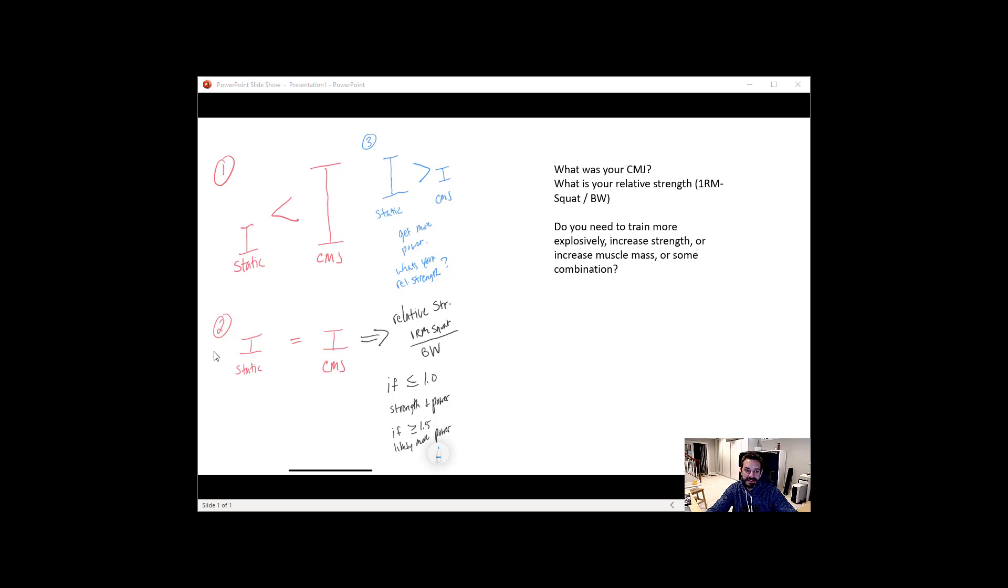Now more interestingly for number two, because there were a couple people that had identical static and counter movement jumps. So now if they're identical you've got to look at your relative strength. It's the same thing you're going to do in situation one or three. What's your relative strength? What's the one rep max in your squat divided by your body mass?